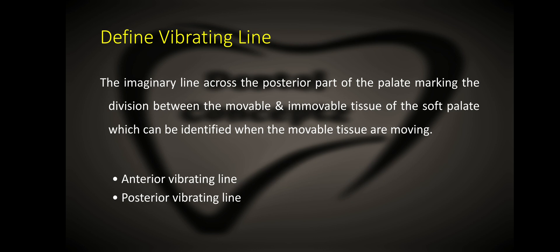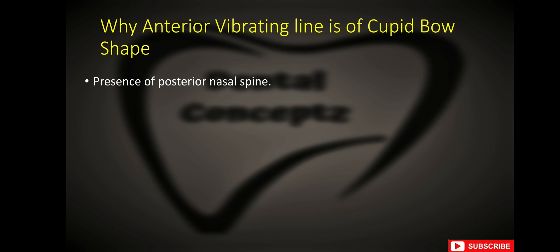What is vibrating line? Vibrating line is the imaginary line across the posterior part of the palate marking the division between the movable and immovable tissues of the soft palate, which can be identified when the movable tissues are moving. There are two vibrating lines: anterior vibrating line and posterior vibrating line. The posterior palatal seal area is the area present between these two lines. The anterior vibrating line is of cupid bow shape because of the presence of the posterior nasal spine.